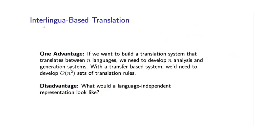There are some potential advantages of this method. In a transfer-based system, let's say we have n different languages — say n equals 10 or n equals 100 — and we want to build translation systems between all different pairs of languages. For every different pair of languages, we're going to have to build a different transfer lexicon, rebuilding the transfer component of the system. So in this case, n squared is approximately 100, or in this case approximately 10,000. That's a lot of work building the different transfer components for the different language pairs.